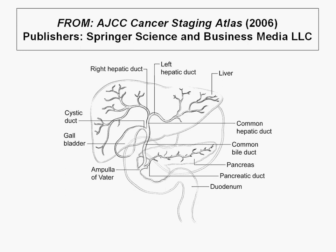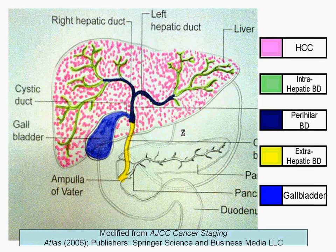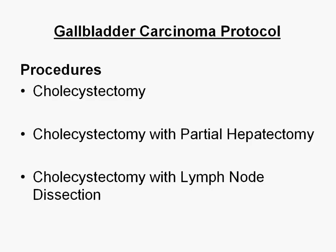This is a chart borrowed from the AJCC atlas and my modification of the same chart. The five checklists we're going to be looking at are color-coded in pink, green, blue, yellow, and lighter blue. The pink is hepatocellular carcinoma, the lighter green is intrahepatic cholangiocarcinoma, and then we have the perihilar and the distal hepatobiliary checklist. I'm going to begin with the gallbladder, which I think is one organ almost everybody wants to see.